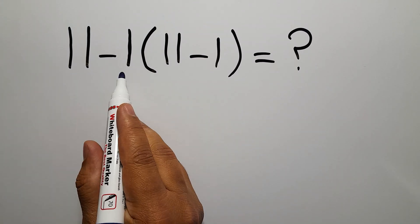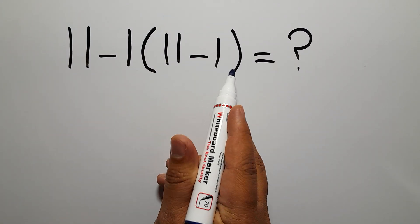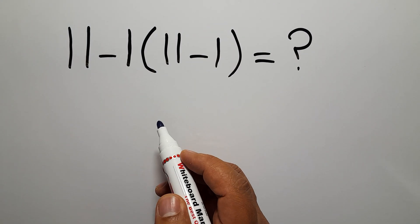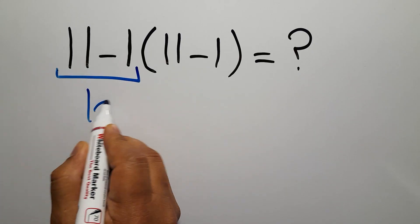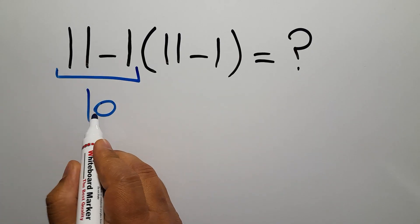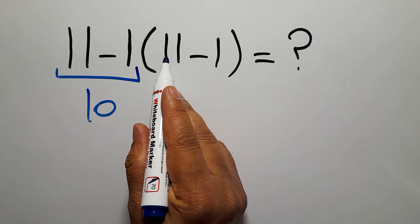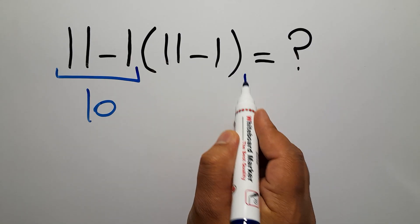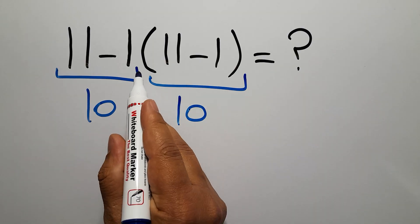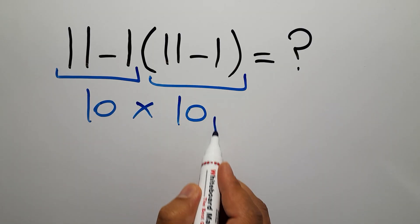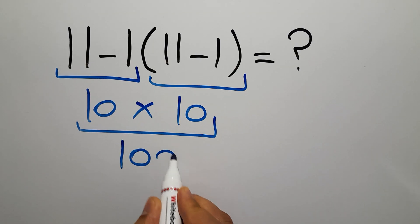11 minus 1, then times 11 minus 1. 11 minus 1 is just 10, so we have 10 times 10, which equals 100. But this answer is not correct.